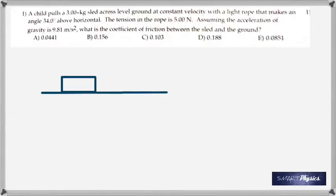Well, here are the answers to the quiz questions that were given today. The first question talks about a child pulling a 3 kilogram sled across level ground at constant velocity with a light rope that makes an angle 34 degrees above the horizontal. The tension of the rope is 5 newtons. Assuming the acceleration of gravity is 9.81 meter per second squared, what is the coefficient of friction between the sled and the ground?